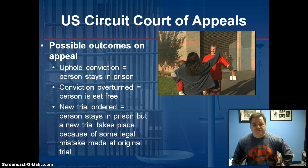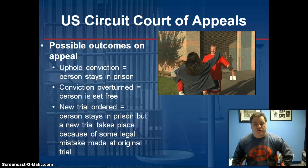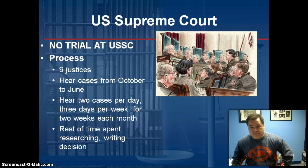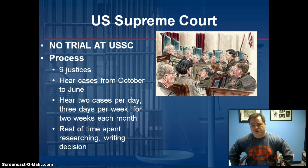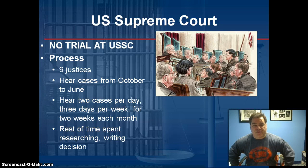If the person fails in their U.S. Circuit Court appeal, they can appeal to the U.S. Supreme Court by filing a writ of certiorari or making a direct appeal. The Supreme Court rarely takes cases, but sometimes they will to resolve a legal issue. There's no trial — the facts are set. The nine justices hear cases from October to June: two cases per day, three days per week, two weeks each month. The rest of the time they spend researching, writing decisions, thinking, and giving speeches.